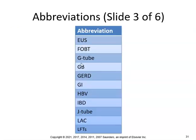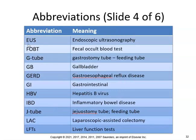More abbreviations: EUS is endoscopic ultrasonography. FOBT is fecal occult blood test. G-tube is a gastrostomy tube — a feeding tube. GB is gallbladder. GERD is gastroesophageal reflux disease. GI is gastrointestinal. HBV is hepatitis B virus. IBD is inflammatory bowel disease. J-tube is a jejunostomy tube — also a feeding tube. LAC is laparoscopic assisted colectomy. LFTs are liver function tests.